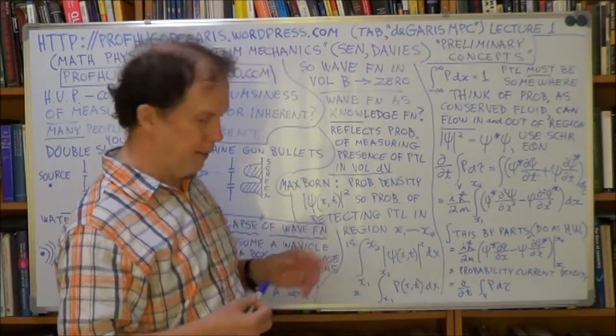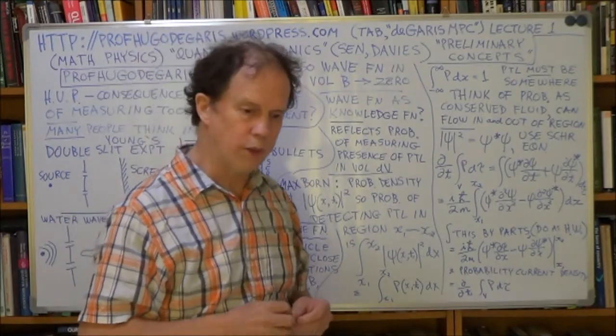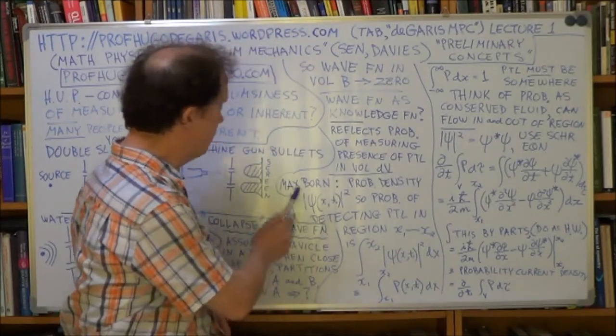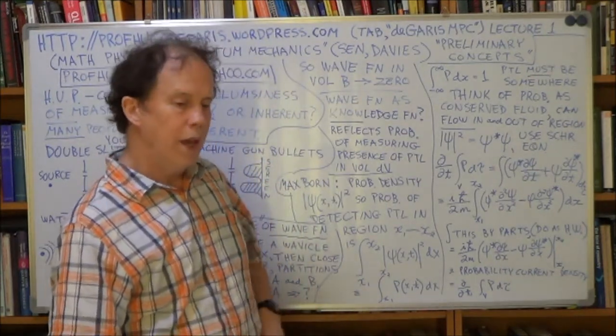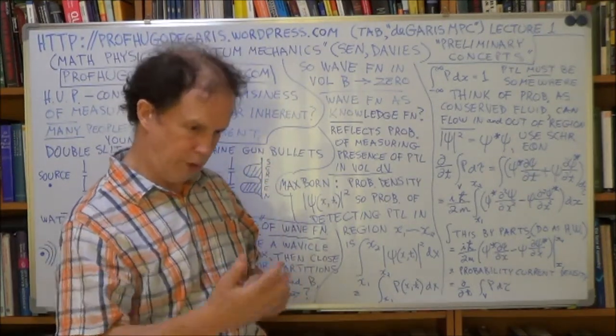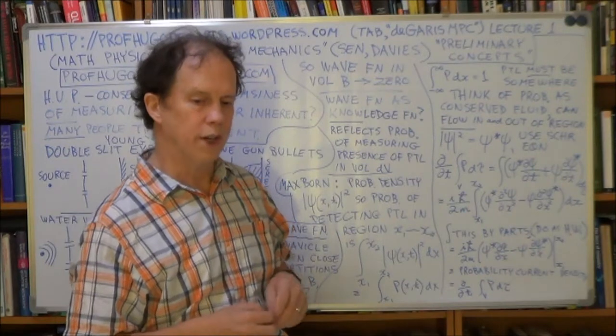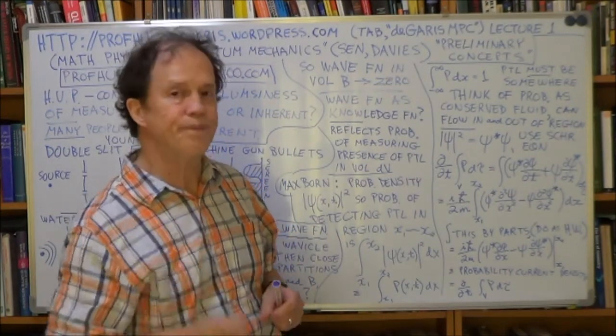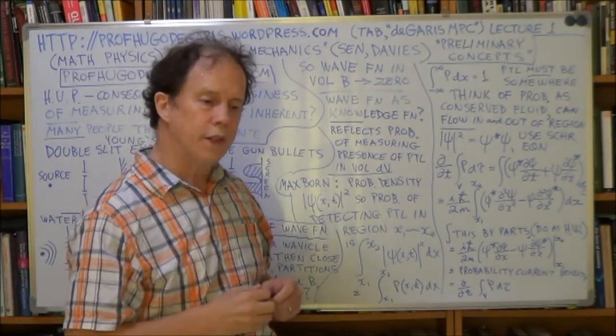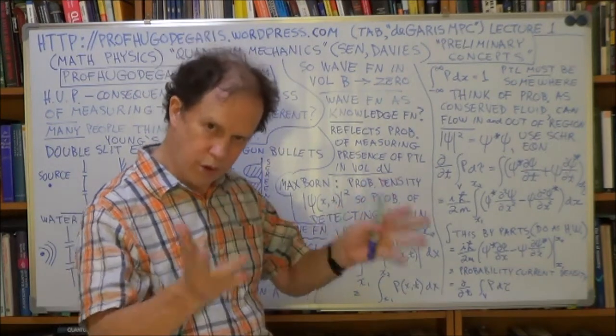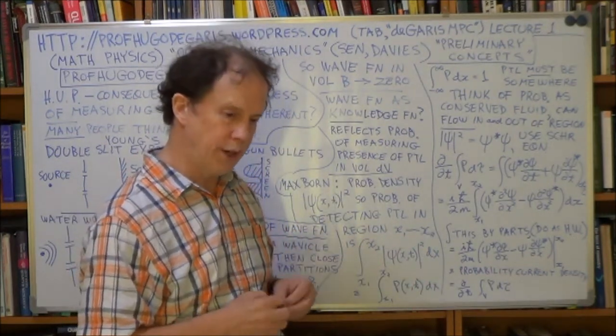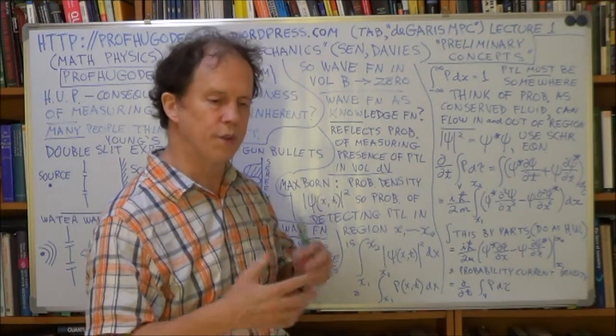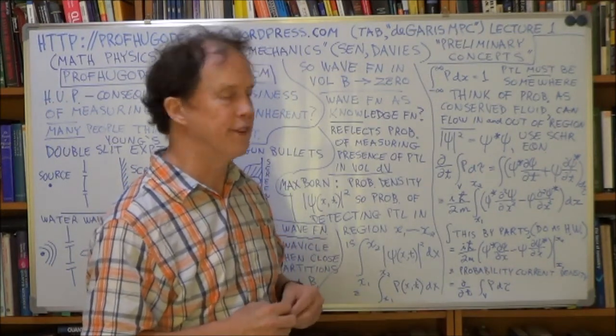Well, eventually, another German guy, a guy called Max Born, B-O-R-N, he suggested his interpretation of the wave function coming from Schrödinger, was that you should, according to Born, interpret this wave function as an amplitude. In other words, you square it to get something physical.